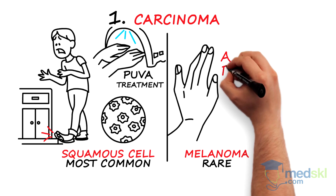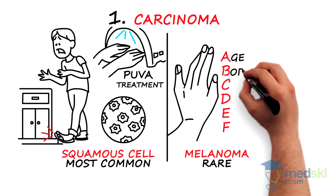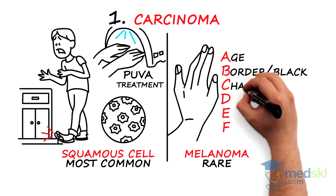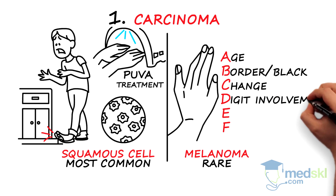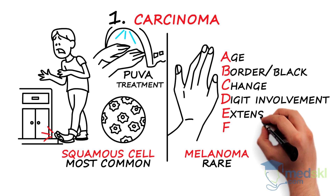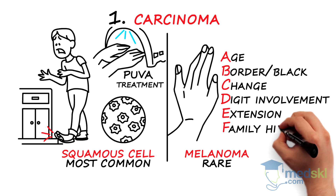Think of the mnemonic ABCDEF. A is for age, peaking from the 5th to 7th decade. B is for border and black. C is for change in the band, either color or size. D is for digit involvement, with thumb and index digit most likely. E is for extension of pigment into the proximal or lateral nail fold. And F is for family history.